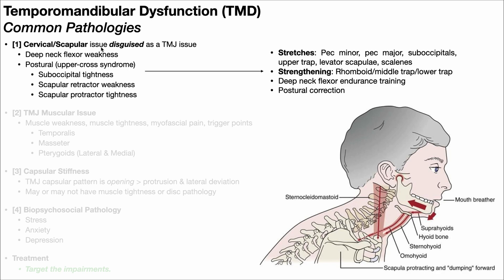The person has jaw pain, but it's not the jaw that's the primary issue. The primary issue is something going on with the neck, thoracic spine, or scapulas. Down here at the bottom right, we see somebody with very significant upper cross syndrome — excessive kyphosis at the thoracic spine, rounding of the shoulders forward, excessive scapular protraction, and then cervical protraction. That places a lot of stress on the temporomandibular joint, which over time can create pain in that area.